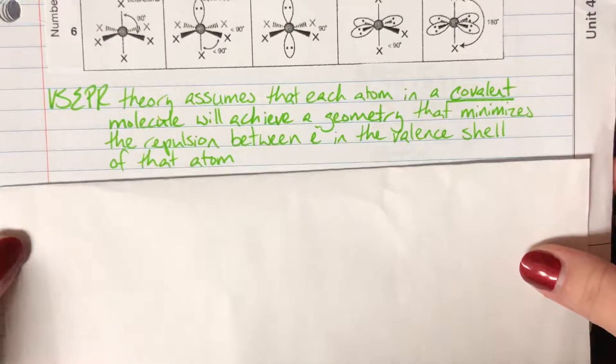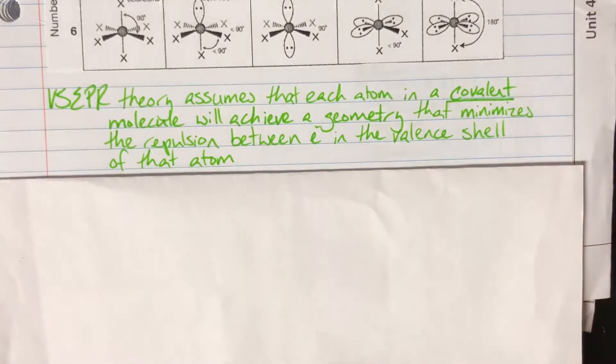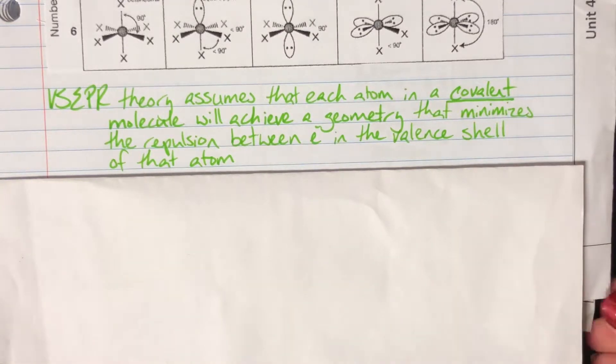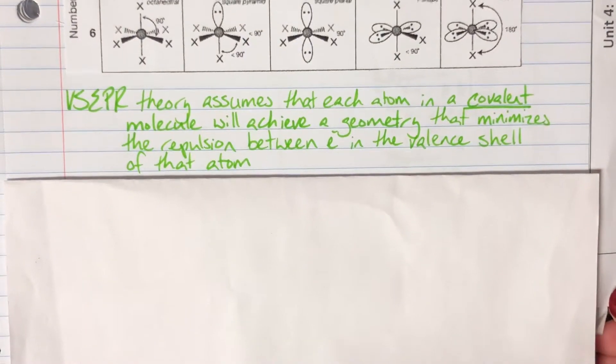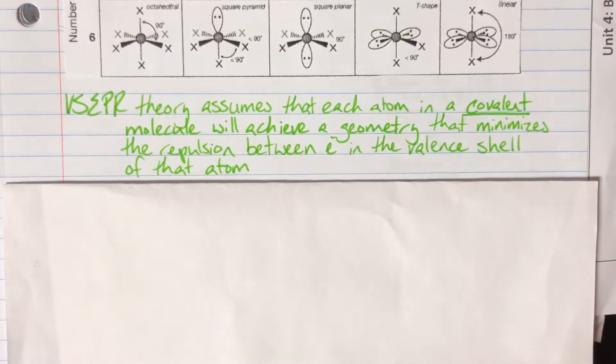It is important to know that VSEPR theory is going to be assuming that each atom in a covalent molecule—it's important that this is a covalent molecule as ionic molecules are going to form crystalline structures and they don't have VSEPR shapes. Covalent molecules are going to achieve a geometry, that means a shape, that is going to minimize the repulsion between electrons in the valence shell of that atom.